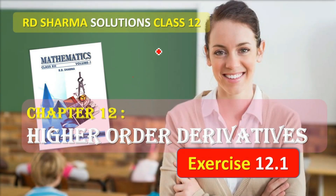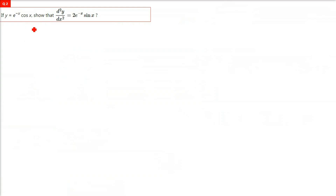This is R.D. Sharma solution, Class 12, Chapter 12, Higher Order Derivatives, Exercise 12.1. If y equals e raised to minus x times cos x, we have to show that d²y/dx², the double derivative, is equal to 2e^(-x) sin x. That means you have to differentiate this twice.